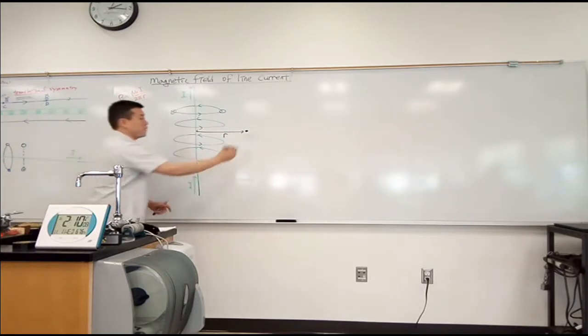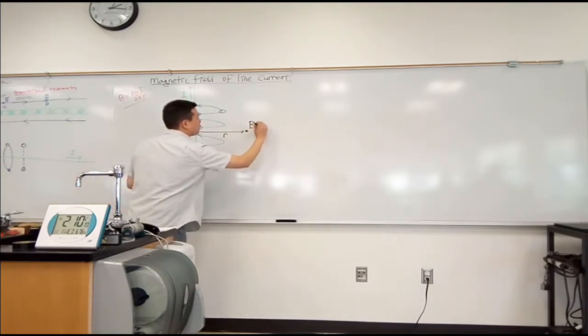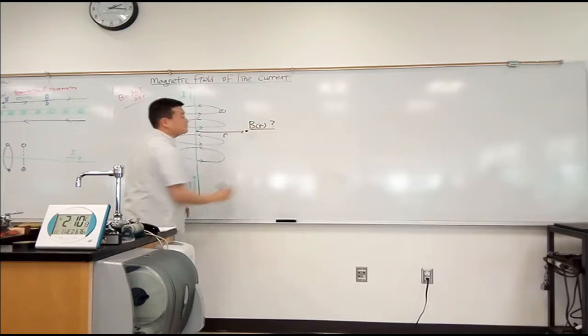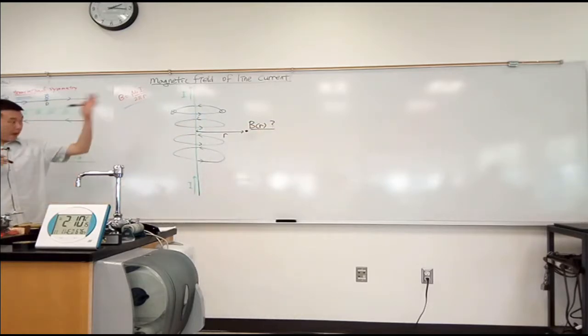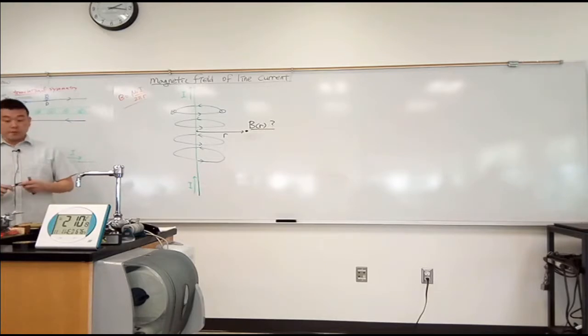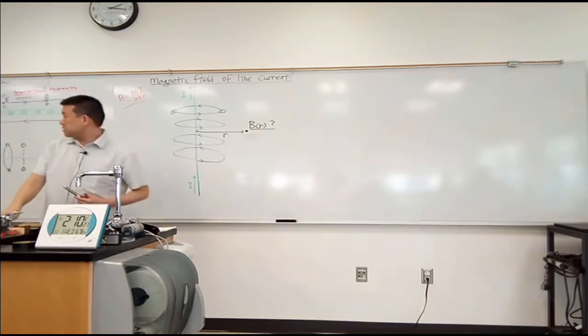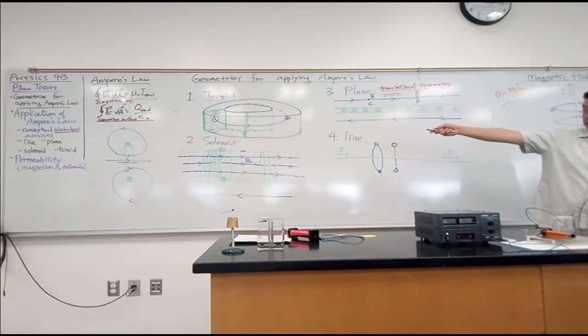And the question would have been, what is the strength of magnetic field at this distance r? Right? So to answer this question, we pick an Amperian loop for which we can say that this B·dl will be constant around the loop.